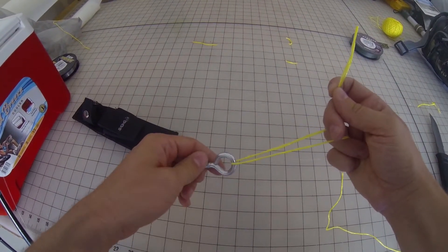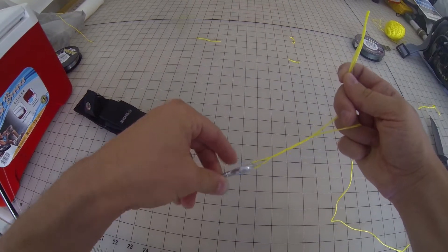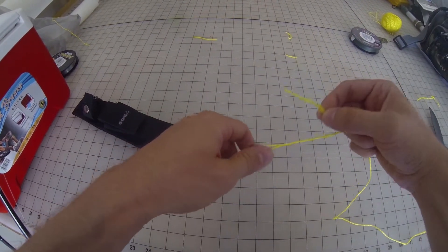Again, a quick way to do it is I just twist until I got about six to seven twists in the line.